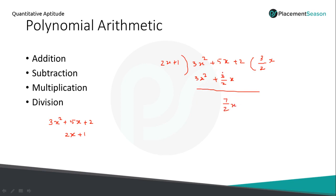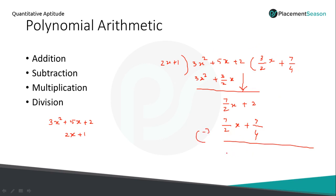Taking LCM: 10/2 minus 3/2 equals 7/2 x. Bring down the constant term 2. Now find a term such that when multiplied by 2x you get 7/2 x — that term is 7/4. Multiplying 7/4 by 2x: 14x divided by 4 equals 7/2 x. And 7/4 multiplied by 1 gives 7/4. Subtracting: the x terms cancel, and 2 minus 7/4 equals 1/4.